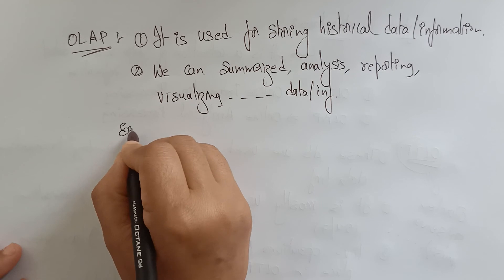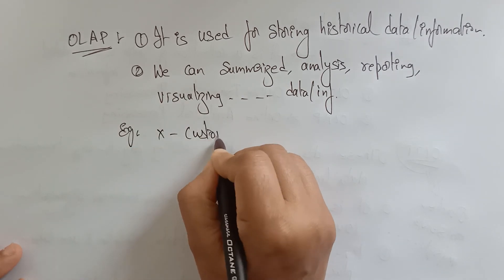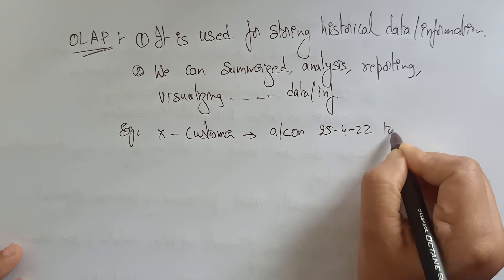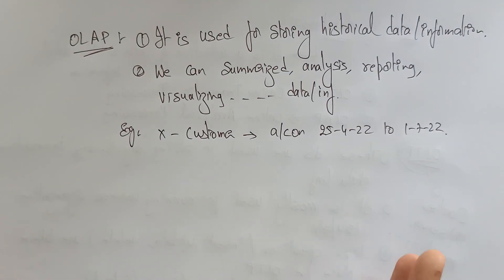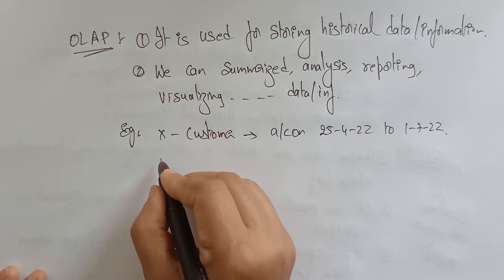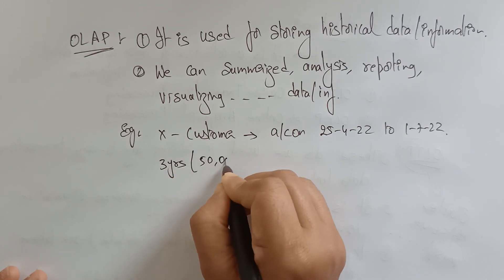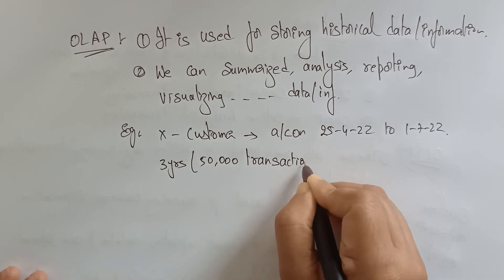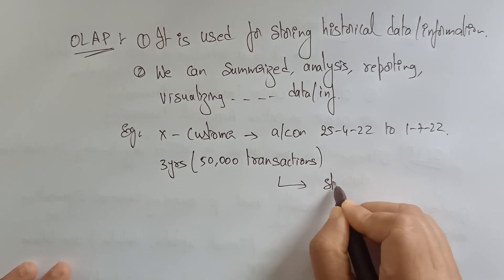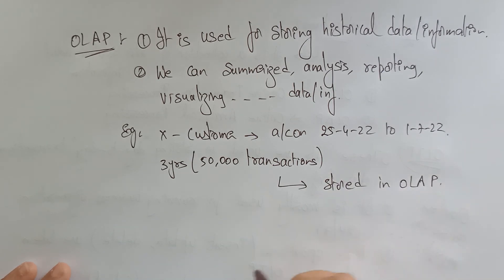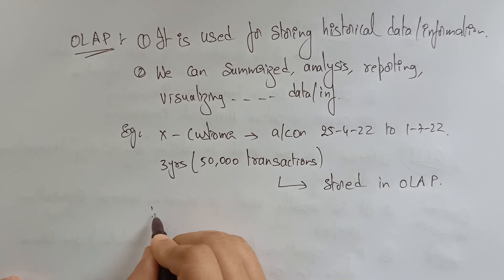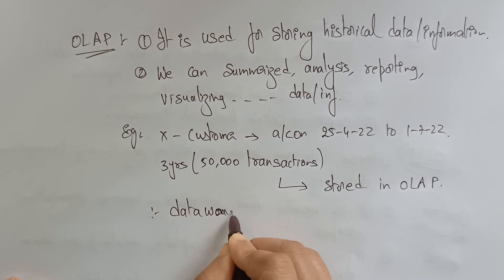For example, suppose a customer has an account active from April 25, 2022 to January 7, 2022 — a three-year period — and has done around 50,000 transactions. These 50,000 transactions over three years are stored in an OLAP — Online Analytical Processing — database, which means they are stored in a data warehouse.